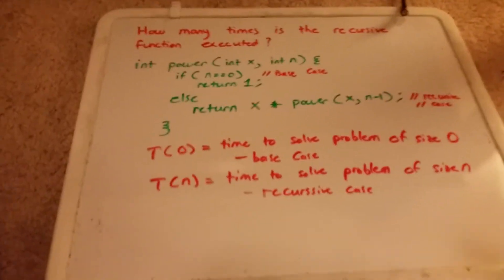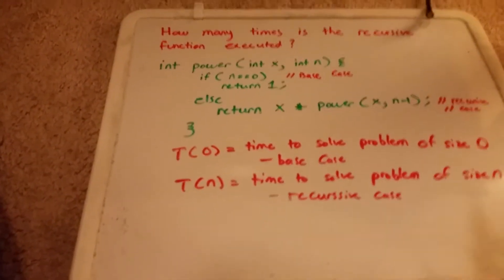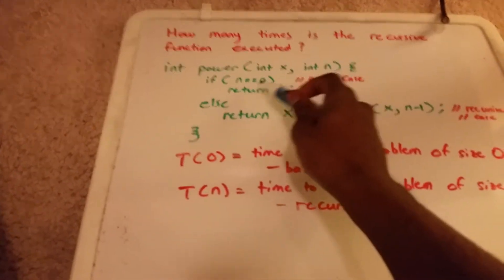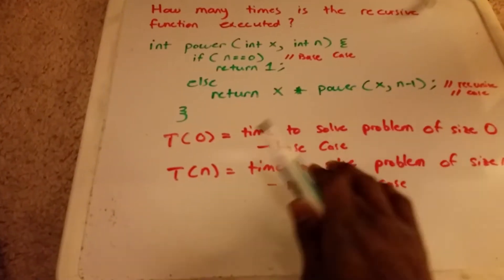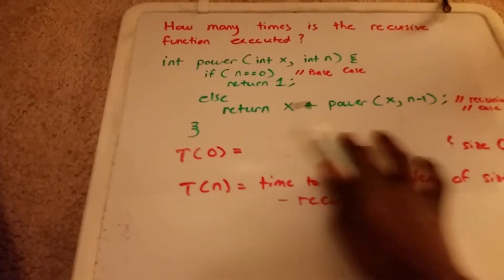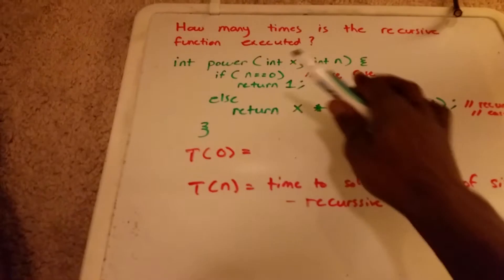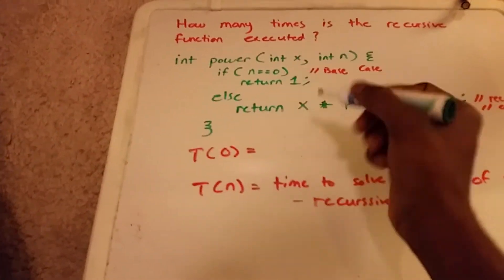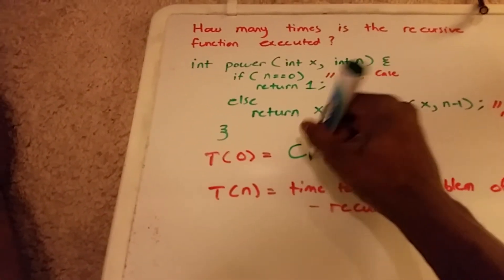Okay, so to solve a problem of size 0, we have if n equals 0, we return 1. So it takes a constant amount of time. Here you see our base case. This takes a constant amount of time. We'll call it c1.